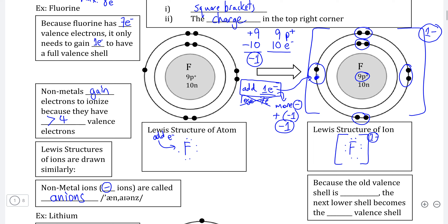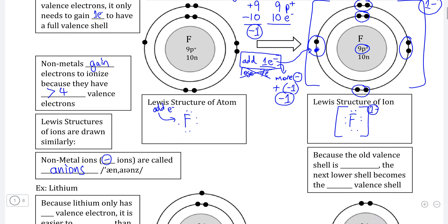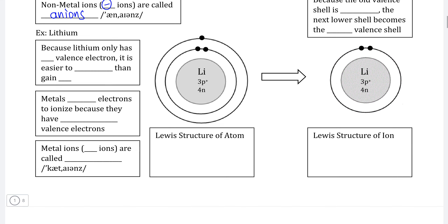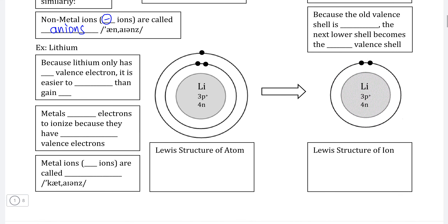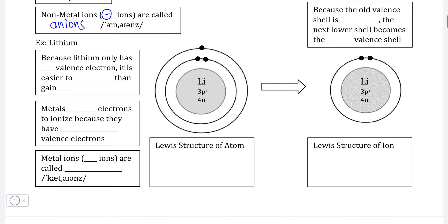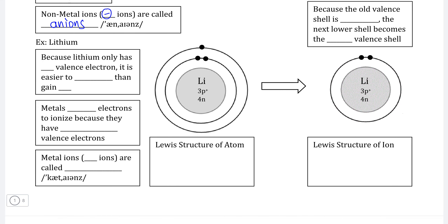Now that we've finished learning about how non-metals form ions by gaining electrons in order to complete their valence shell and have a full set of eight valence electrons, it's time to look at how metals form ions — in which they do so by doing exactly the opposite as non-metals.